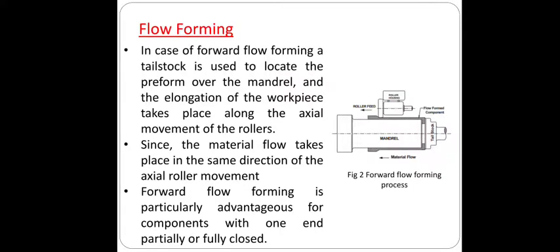In forward flow forming, a tailstock is used to locate the preform over the mandrel, and the elongation of the workpiece takes place along the axial movement of the rollers. The material flow takes place in the same direction as the roller movement, as shown in the figure. Forward flow forming is particularly advantageous for components with one end partially or fully closed.